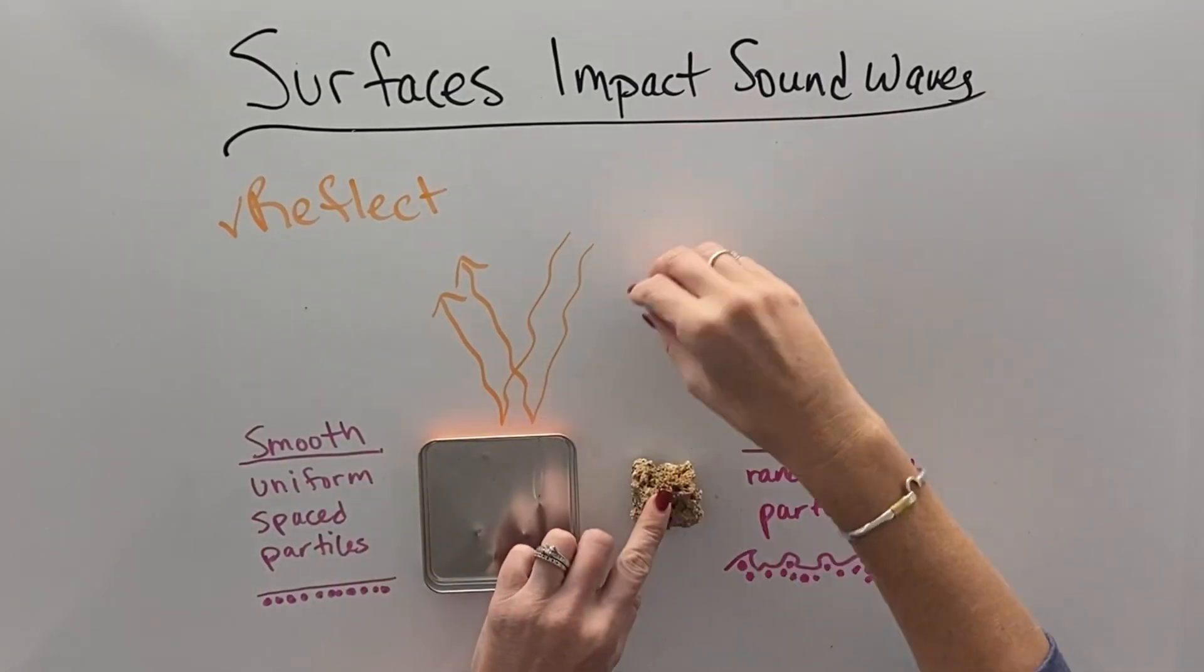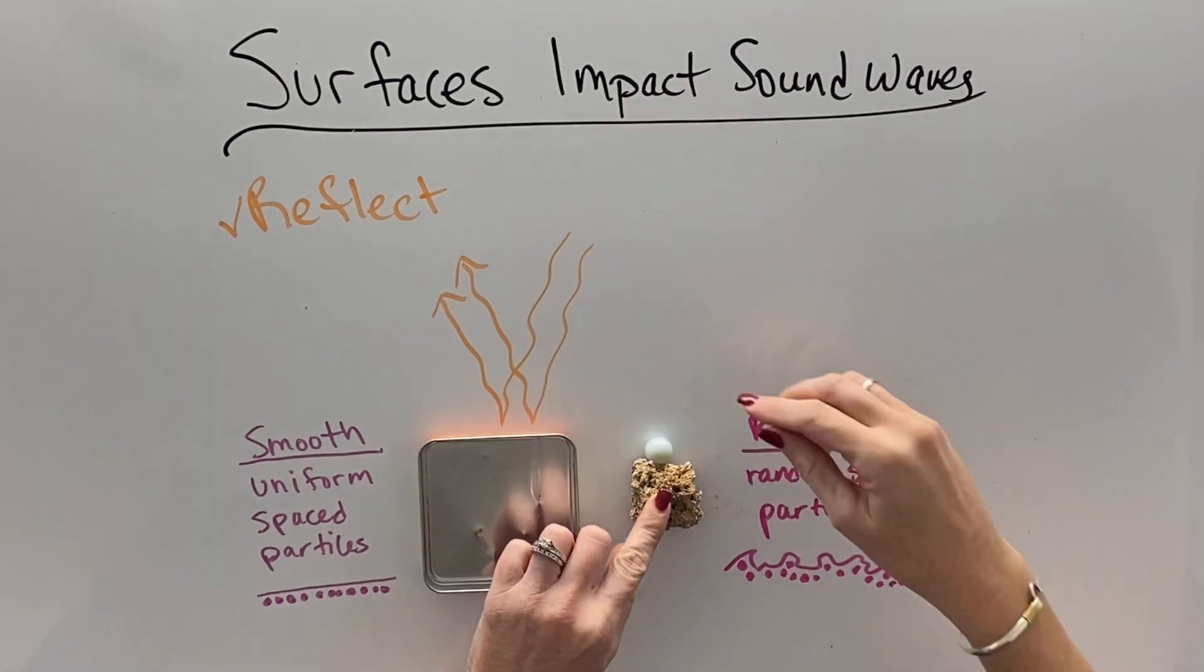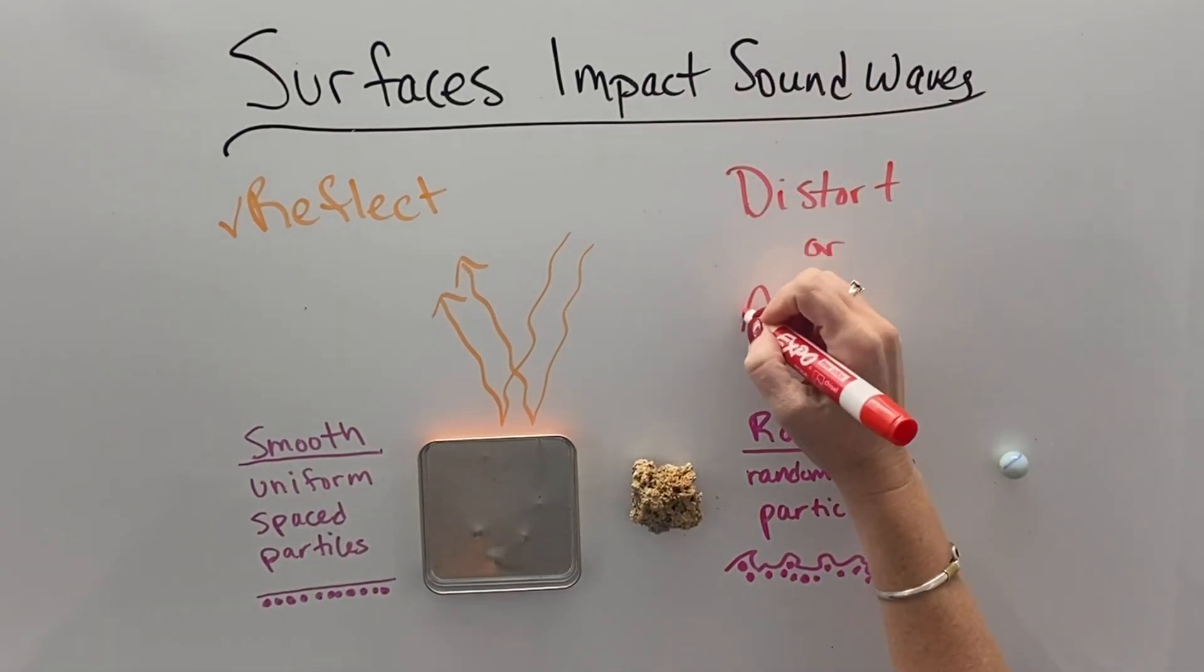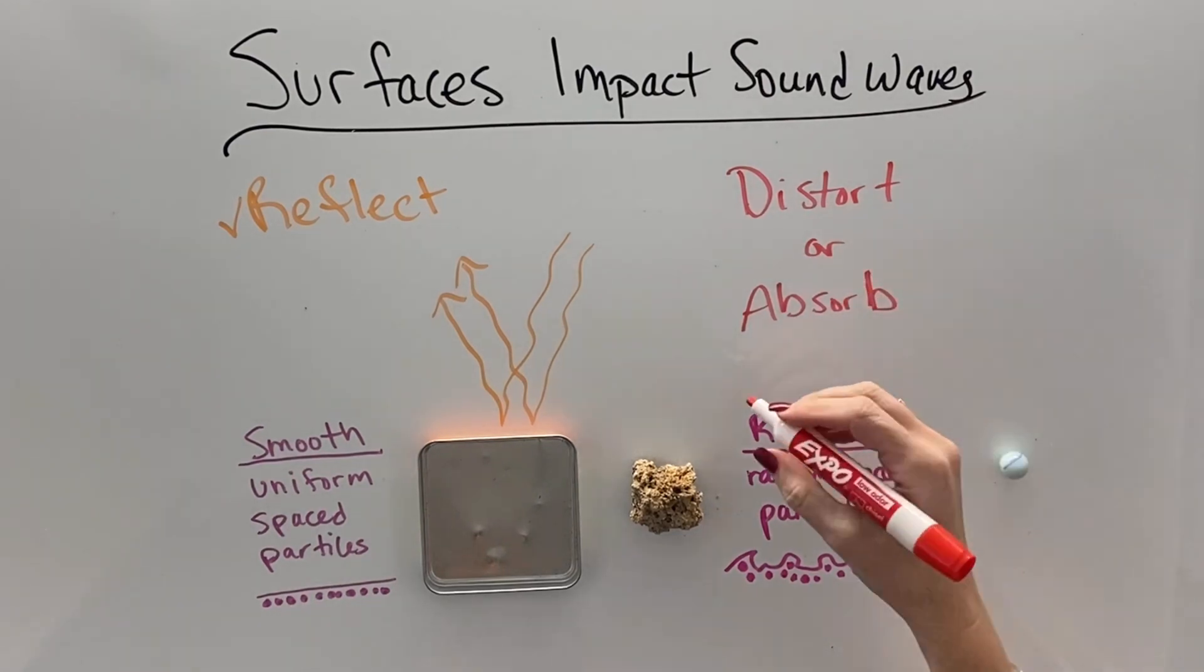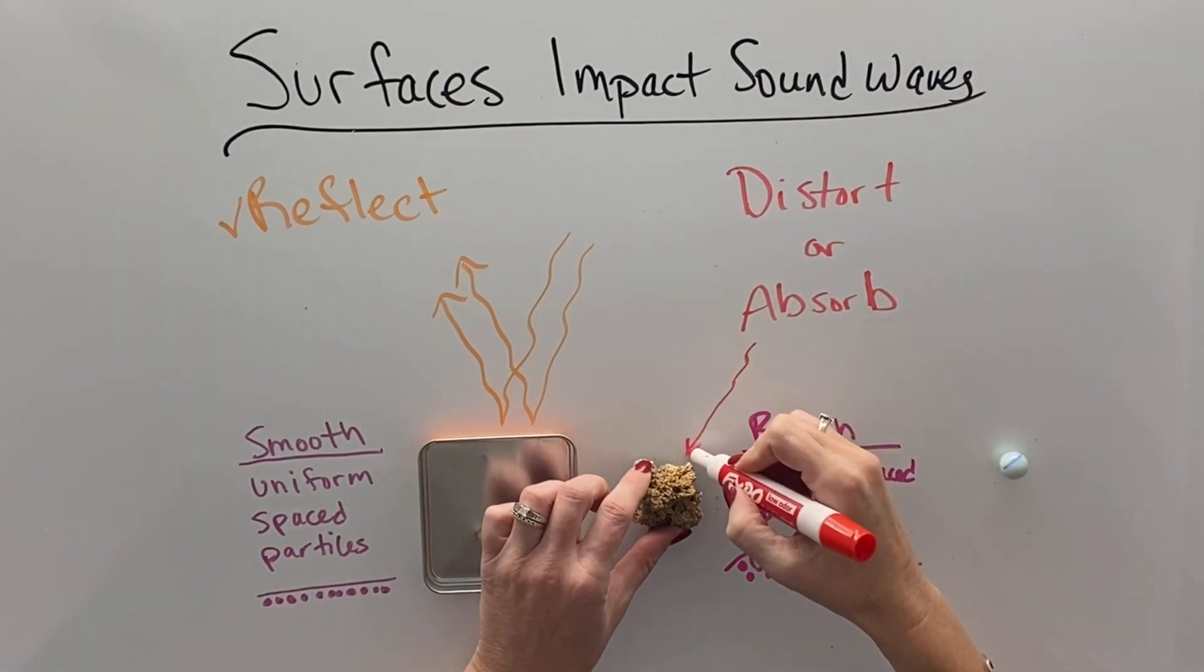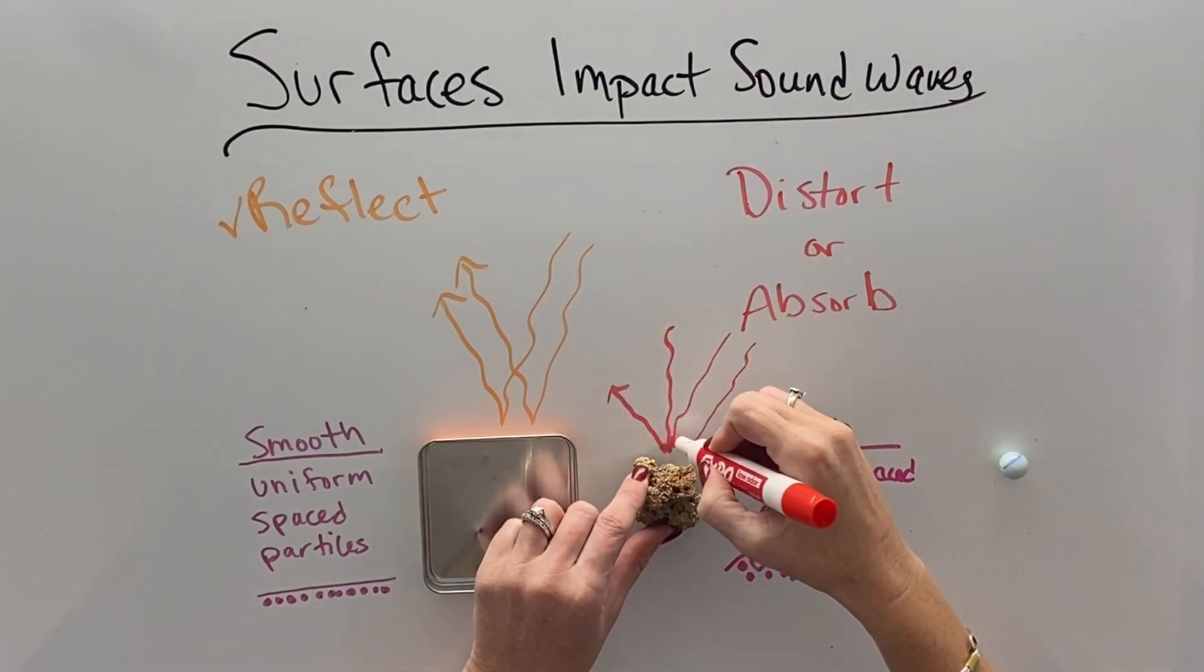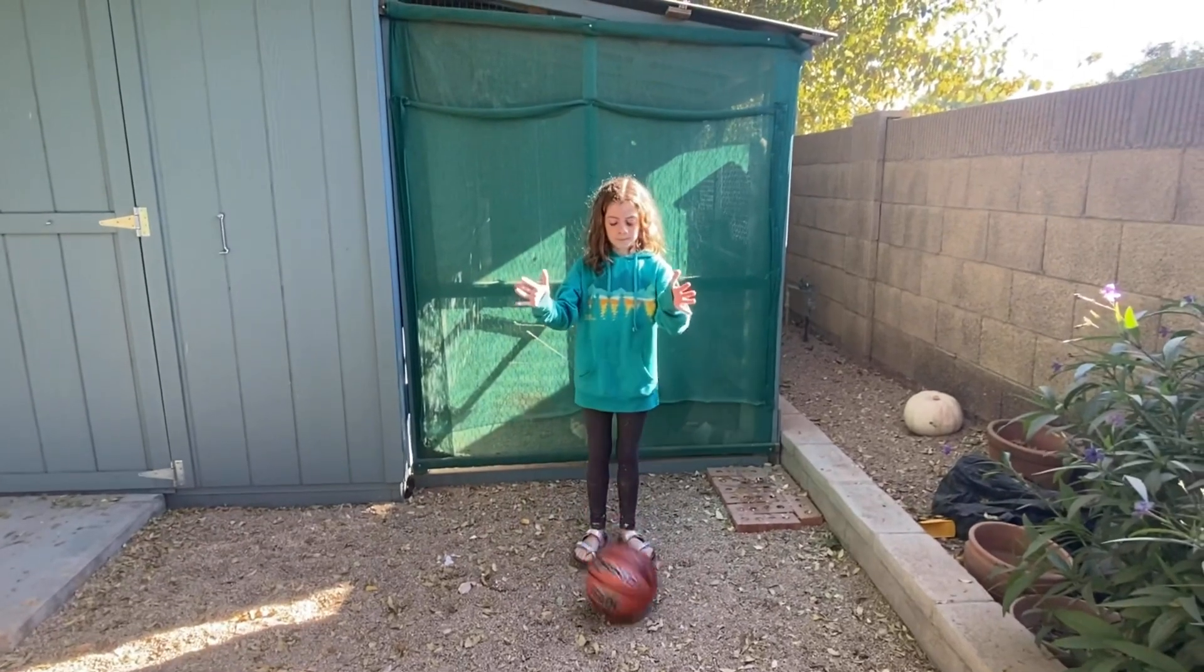When you bounce something off of a really bumpy surface, then it can bounce any sort of direction, which is a distortion, or it can be absorbed and just stop moving altogether. And so rough surfaces tend not to reflect sound very well, just like this ball just sort of bounces off to the side in these rocks.